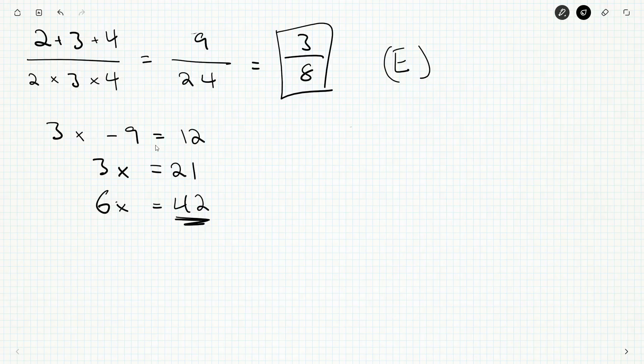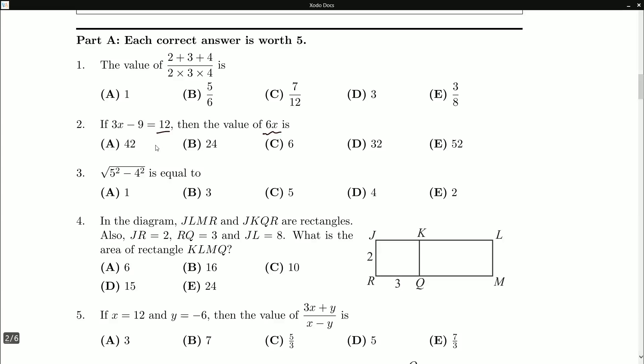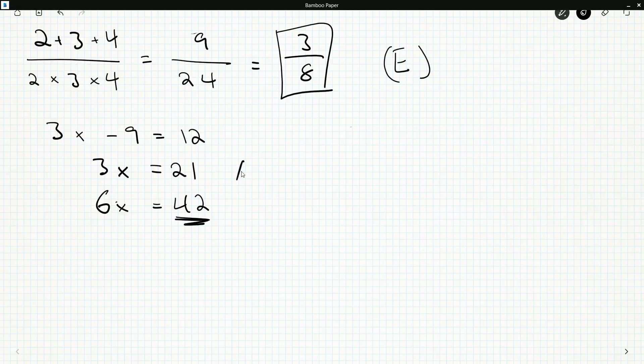And if you can speed things up like that in parts A and B, it leaves more time for the hard questions like part C. So we'll look for 42 in the answers. And it's the first one. So there we go.